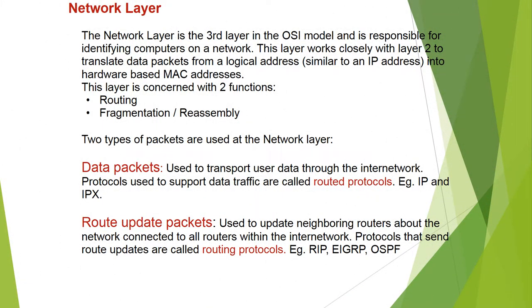The Network layer is the third layer in the OSI model and is responsible for identifying computers on a network. This layer works closely with the second layer to translate data packets from a logical address, similar to an IP address, into a hardware-based MAC address.